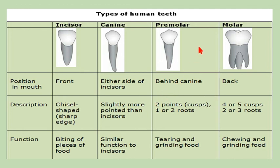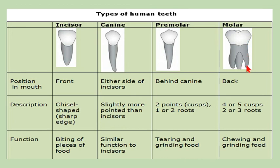The third type of tooth is the premolar, present behind the canines and before the molars. Premolars have two cusps and one or two roots, and are used for tearing and grinding food. Molars are present at the back, have four or five cusps and two or three roots, and are also used for chewing and grinding food.